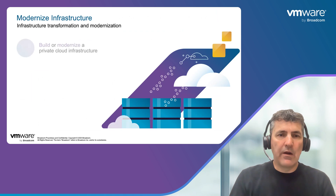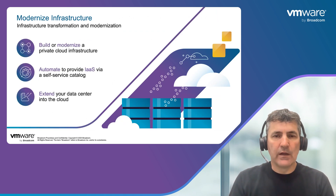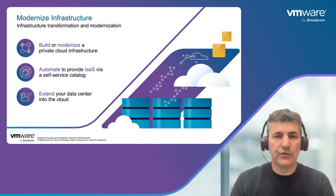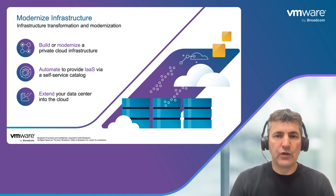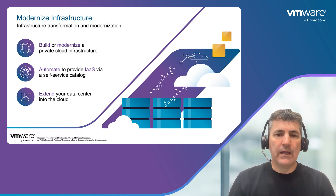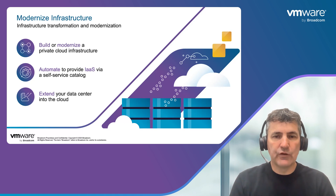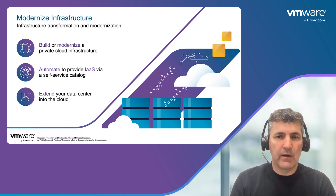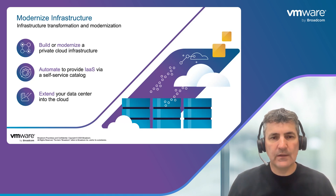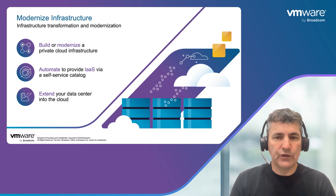When it comes to modernizing our infrastructure, we're really talking about a couple of things. First, we're talking about making it very easy for our customers to build and operate modern infrastructure using a cloud-like operating model. This entails both going in and updating some of the infrastructure we're using in our data center, maybe modernizing some hardware, but also updating some of our processes and procedures.